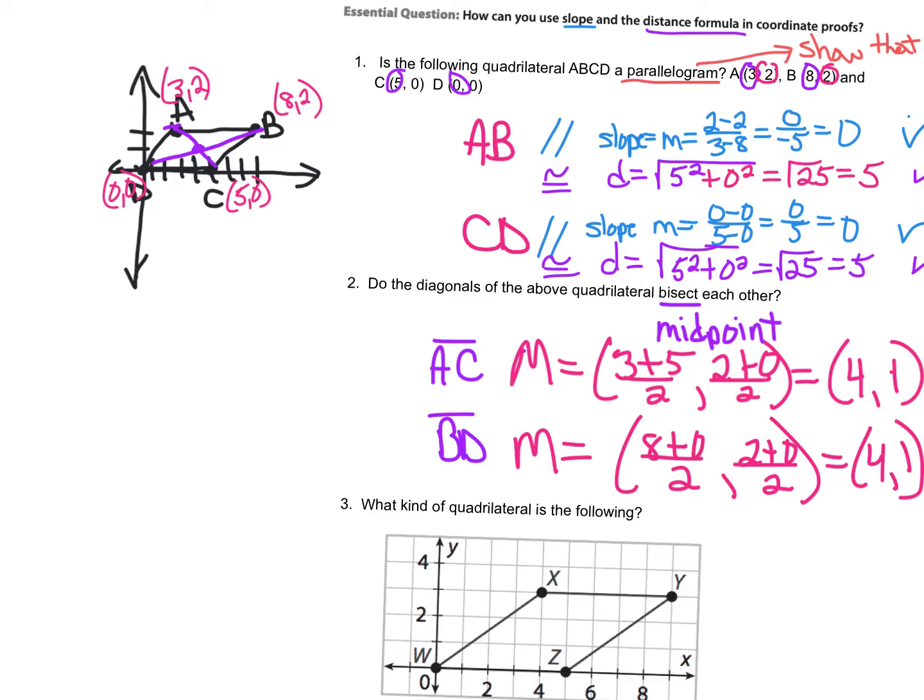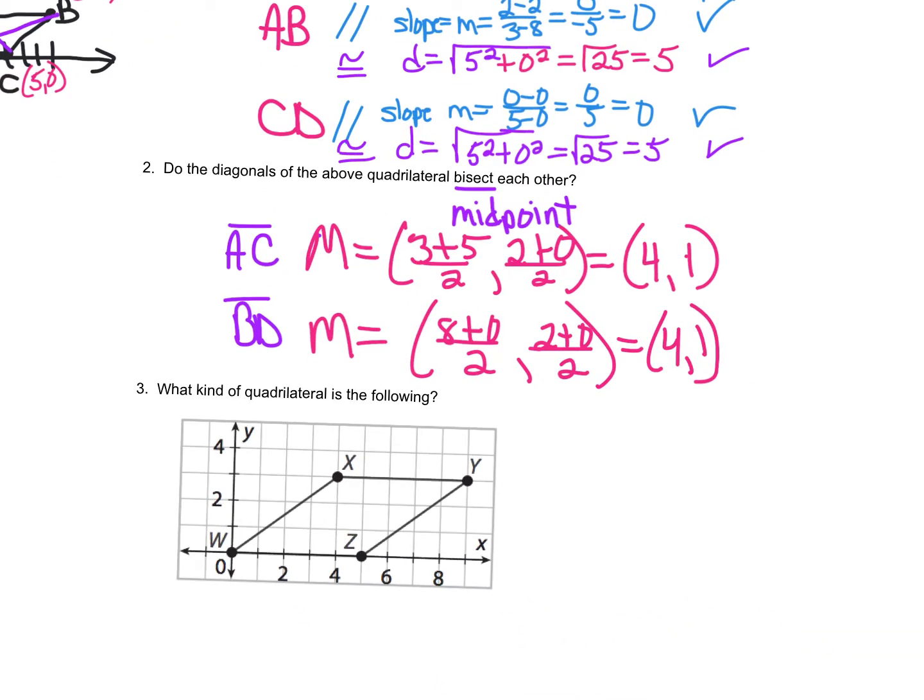And so yes, they bisect each other. They go through. The midpoint is on both of those lines. So the next thing it says, what kind of quadrilateral is the following?